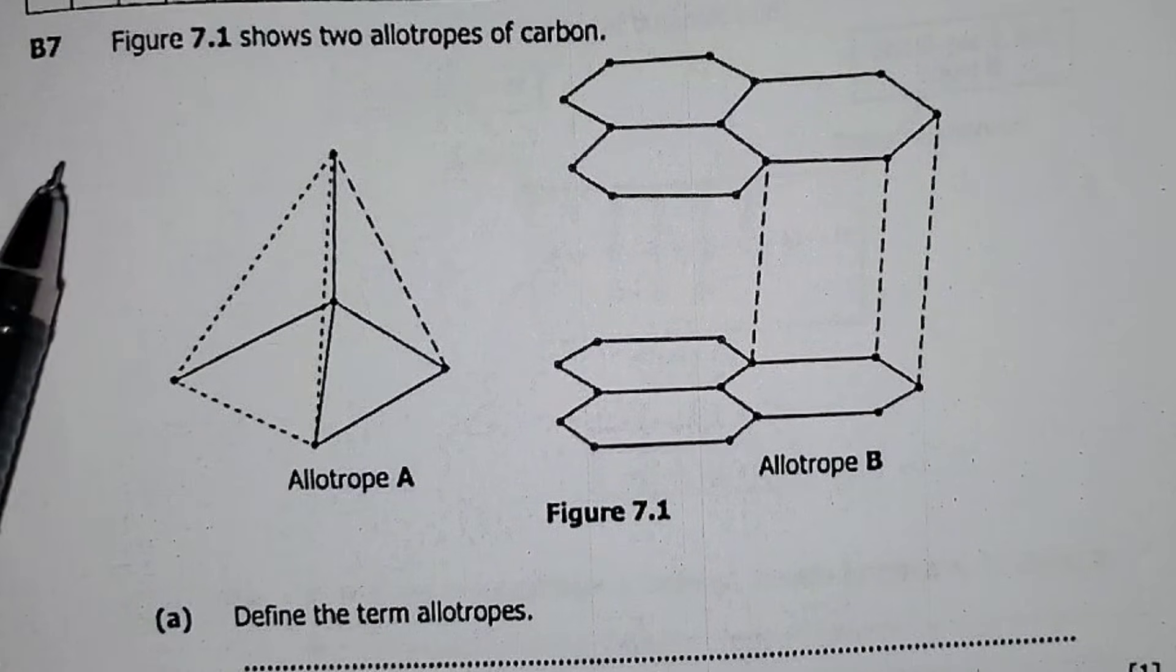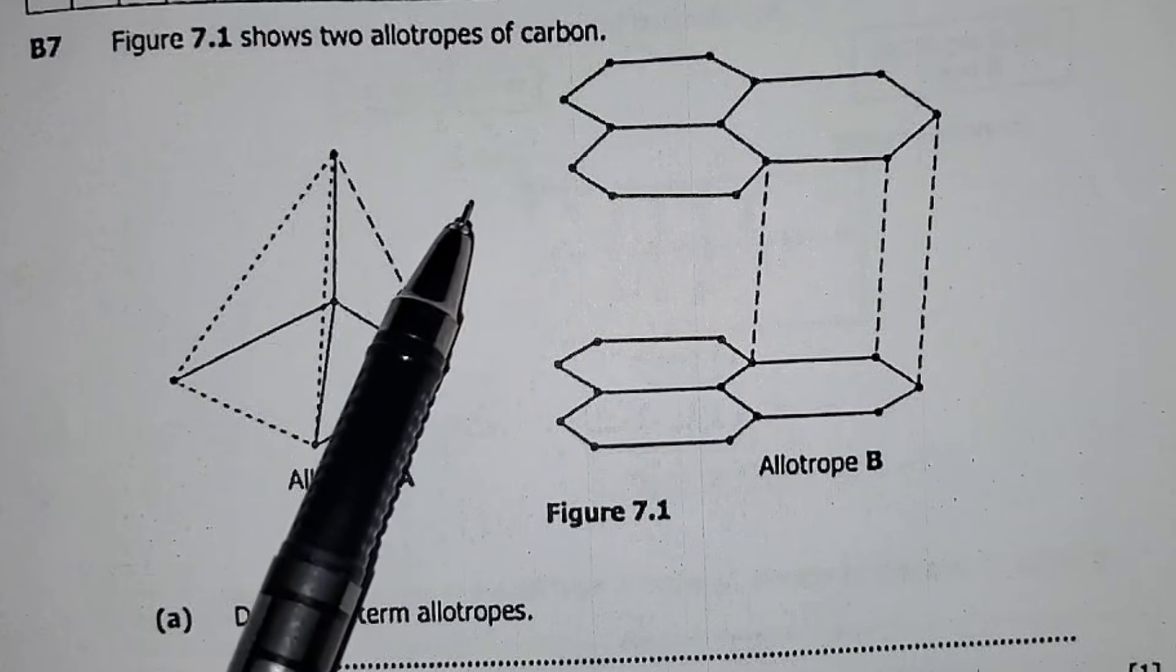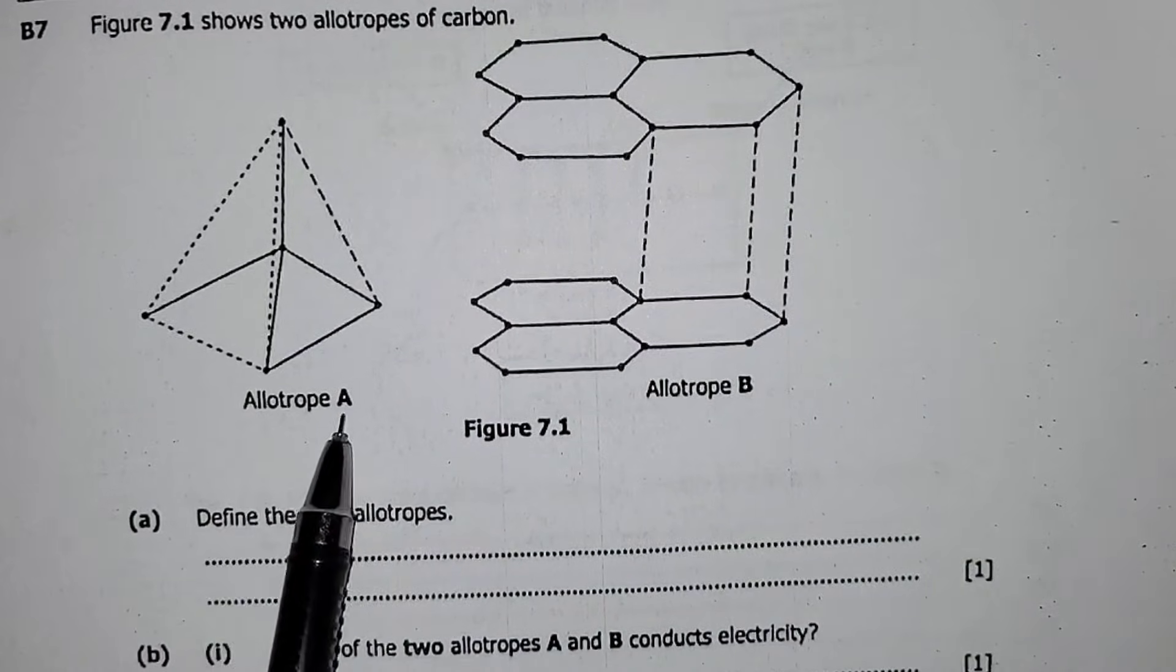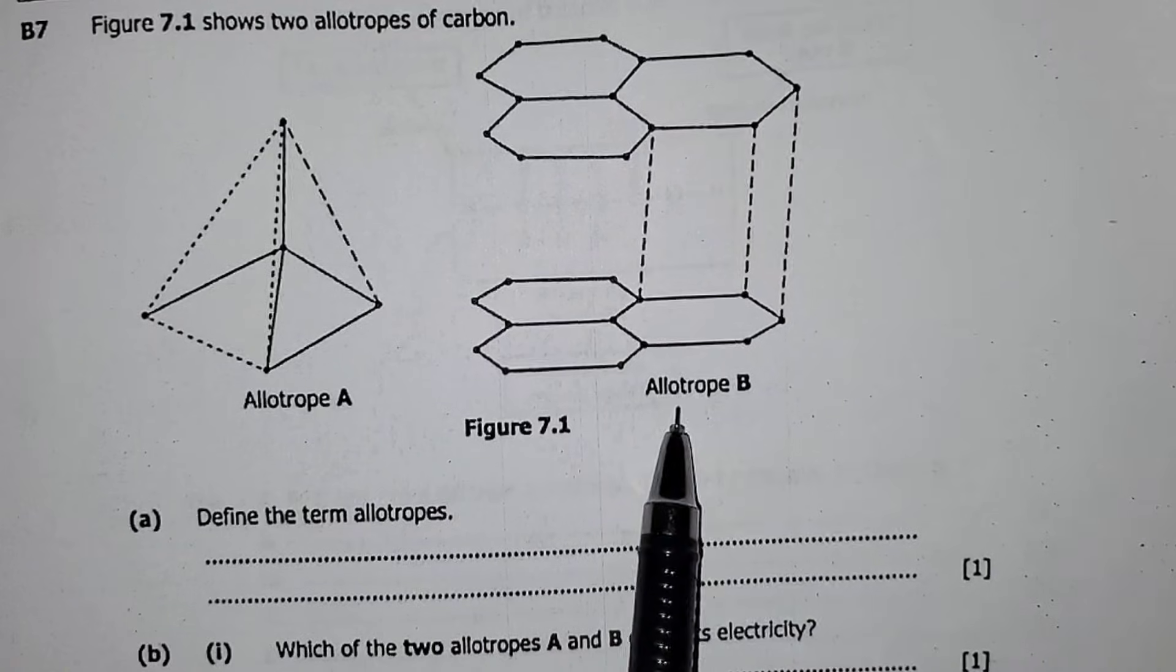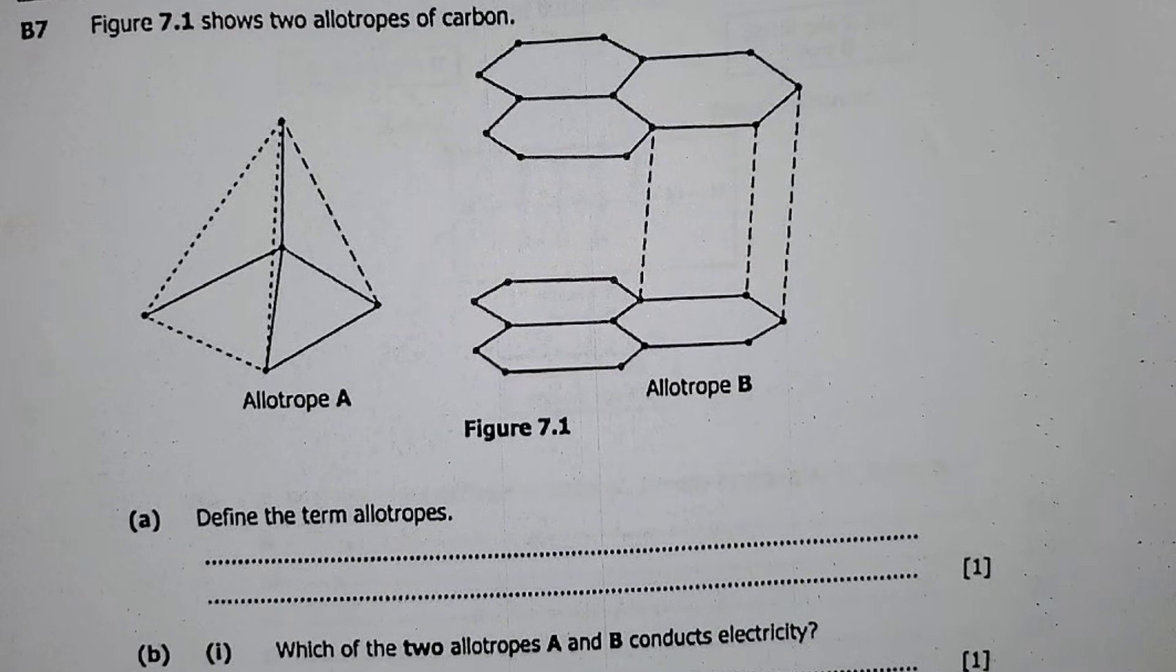B7 is saying Figure 7.1 shows two allotropes of carbon, so you have allotrope A and allotrope B. All right, the first question is saying, which is question one.